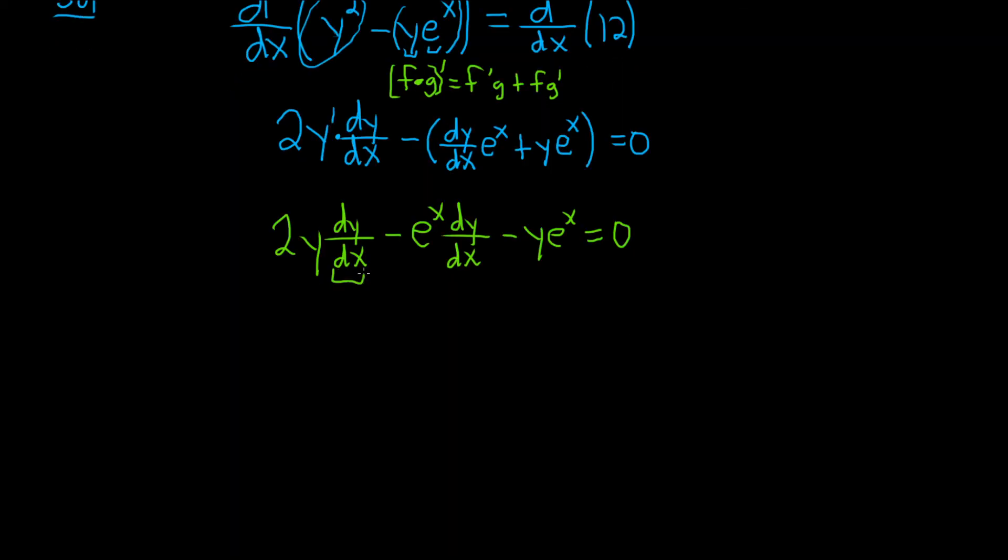Okay. So now we can pull out dy/dx. So dy/dx parentheses. And here, we were left with 2y minus e to the x. And then here we have minus y e to the x. And this is equal to 0.